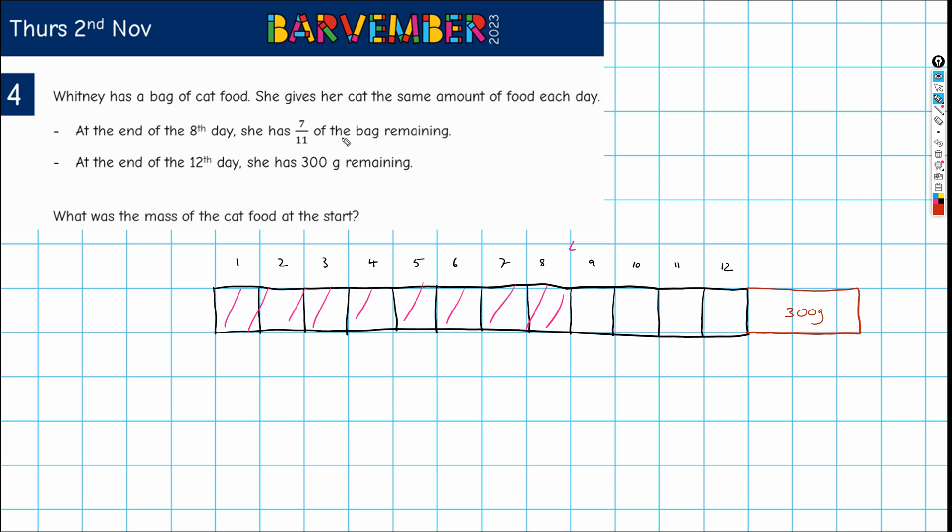Okay. So at the end of the eighth day, she has seven elevenths of the bag remaining. So from here to here is seven elevenths. Okay. Now, then you have to have a look and think, what's going on? Is that all the information I need? No, not quite. Well, if this is seven elevenths, then that also tells me about this part here, which means that this part here up to and including day eight must be the other part of the seven elevenths, that's four elevenths. And that's when I realized that things have been drawn out of scale perhaps, but it doesn't matter.